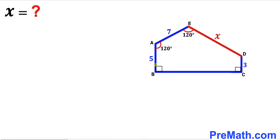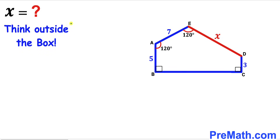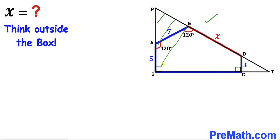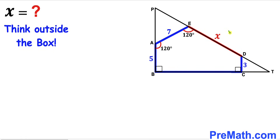For our very first step, let's focus on angle ABC, which is a right angle of 90 degrees. We know angle BAE is 120 degrees and angle AED is 120 degrees. To make our job simple, we are going to think outside the box and construct right triangle PBT such that it superimposes the given polygon ABCDE.